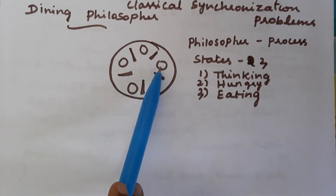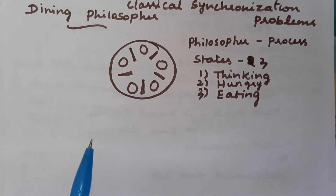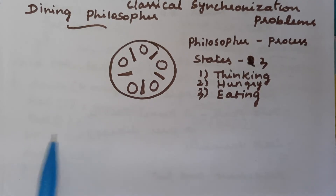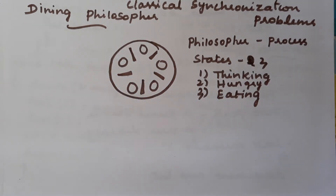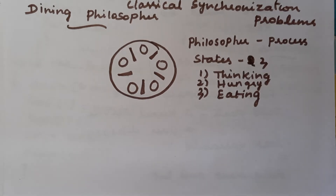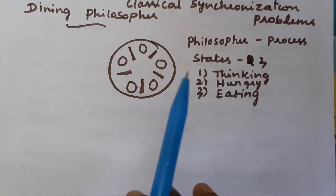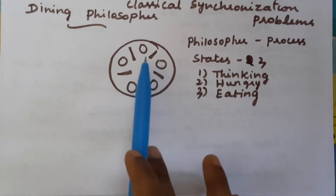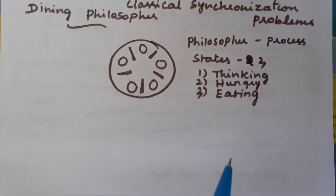If the first and second philosopher both feel hungry, only one can be changed from thinking state to eating state at the same time. We include the hungry state to check whether any philosopher can enter into the eating state. The eating state is the critical section — only one philosopher at a time can perform that task. So in the hungry state we check whether both forks are available before allowing the philosopher to enter the eating state.